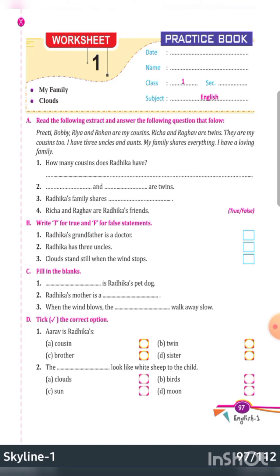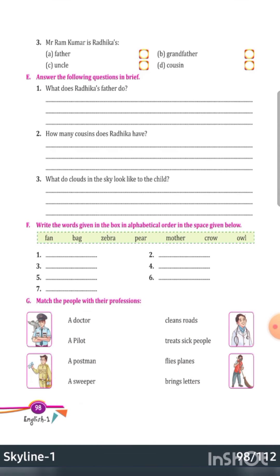Take the correct option. Raghav is Radhika's cousin, twin, brother, or sister — brother, I think. The dash looks like white sheep to the child. What does the child think about the thing mainly discussed in the poem — clouds, birds, sun, or moon? You will decide and recall yourself. Next page: Mr. Ramkumar is Radhika's father, grandfather, uncle, or cousin — grandfather.